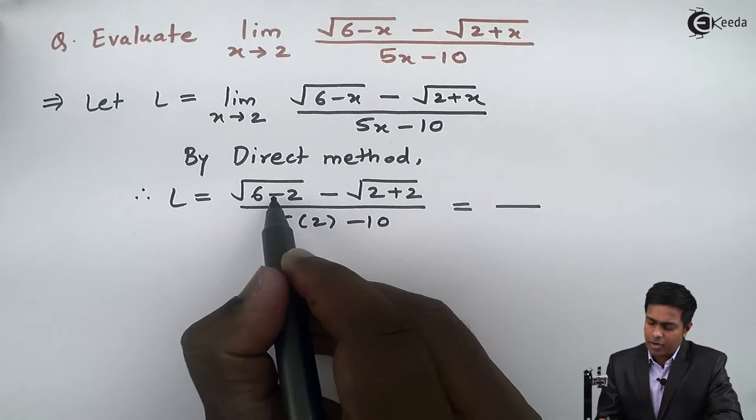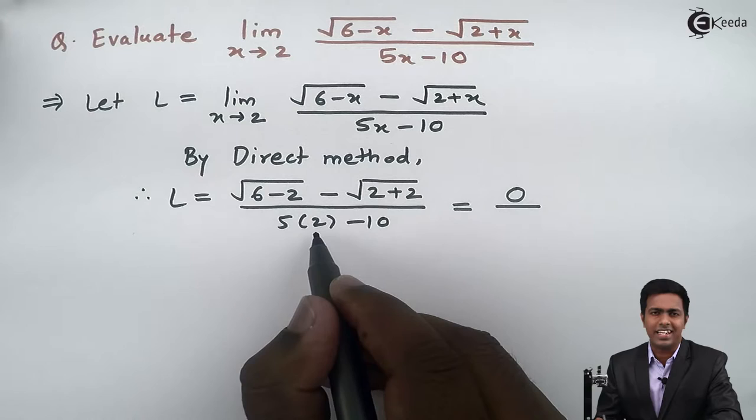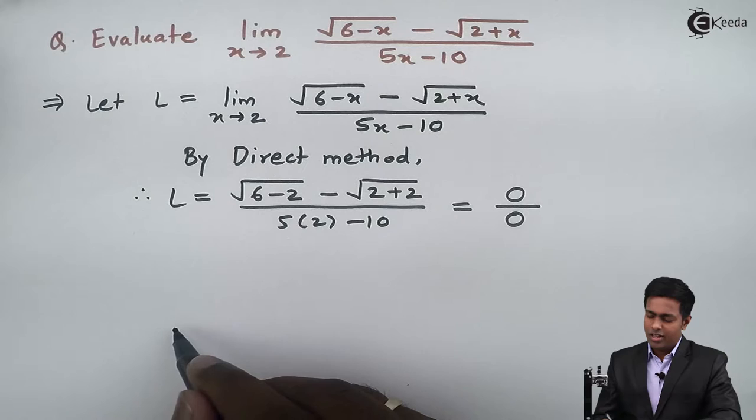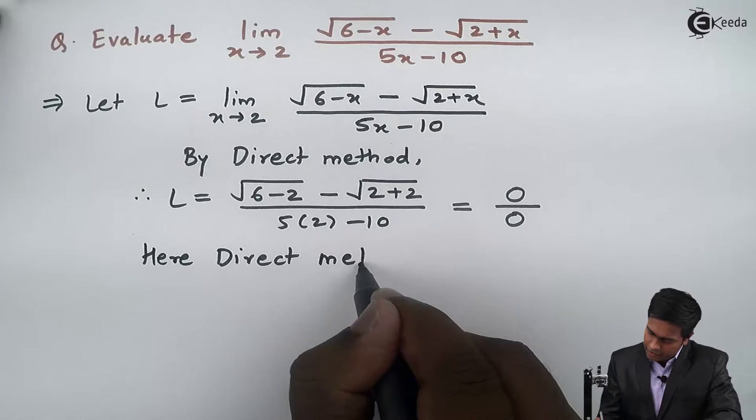Now 6 minus 2 is 4, so it becomes √4 minus √4, which is 0. And 5 into 2 is 10, minus 10 is 0. So here we are getting 0 upon 0, that is the indeterminate form. Whenever we get 0/0 by the direct method, we say direct method fails. So here, direct method fails.